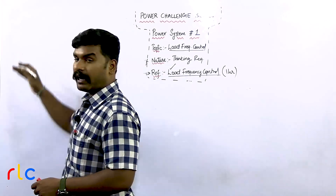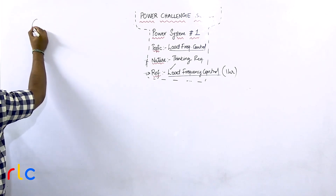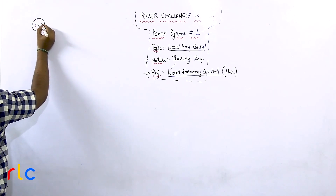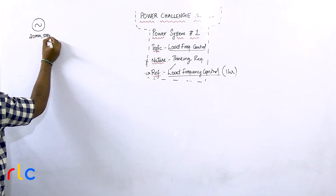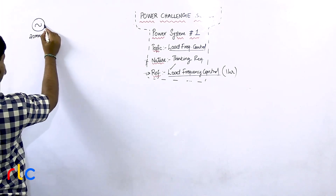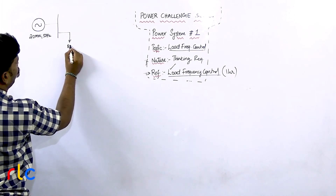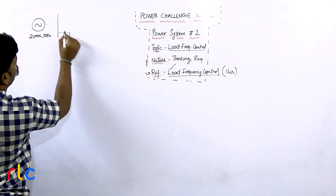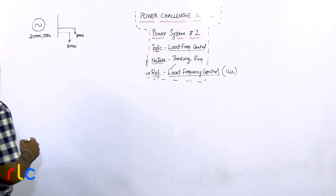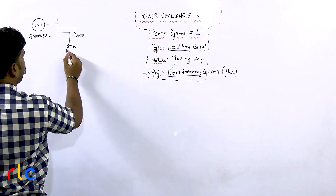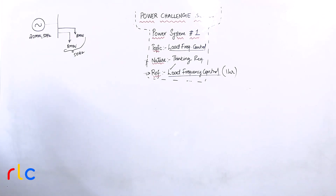Now we will try to analyze this problem and solve it. First, let's visualize what is given in the question. There is a generator whose rating is 20 megawatt and rated frequency is 50 hertz. This generator is supplying two loads — one load is 8 megawatt and the other load is also 8 megawatt. When operating at 8 plus 8 megawatt, both operate at a frequency of 50 hertz.